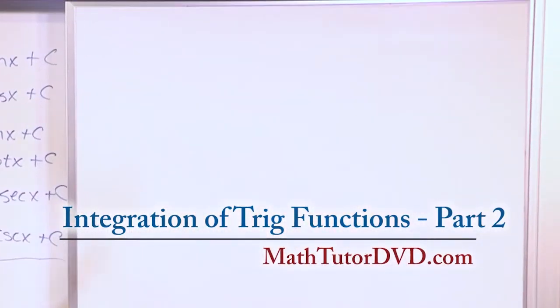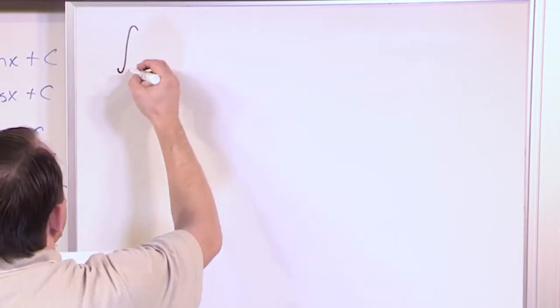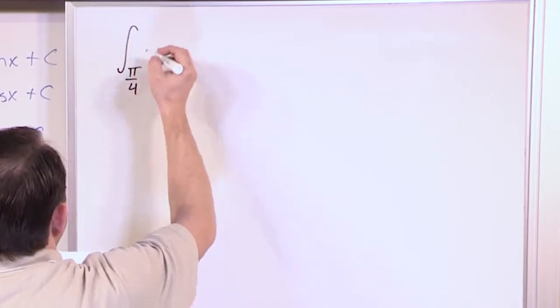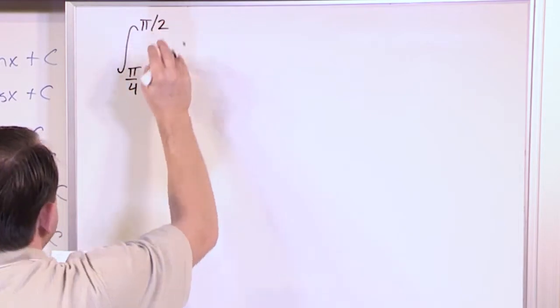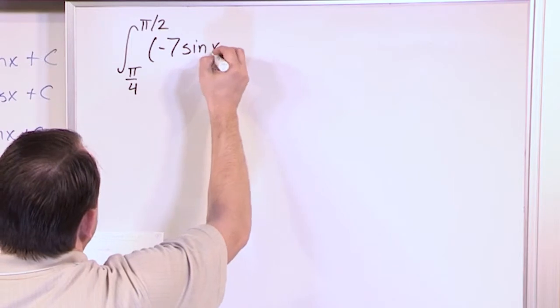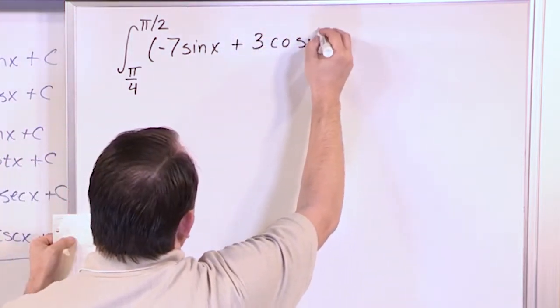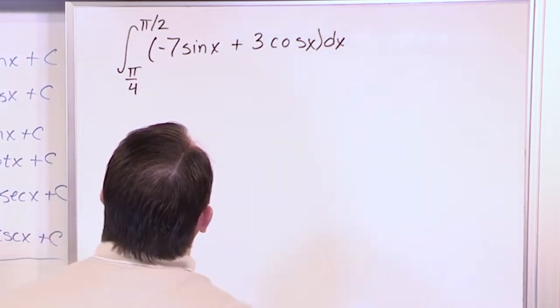So let's just get some practice here. What if you had the definite integral from pi over 4 up to pi over 2 of the following function: negative 7 times the sine of x plus 3 times the cosine of x dx, and we would like to integrate this.